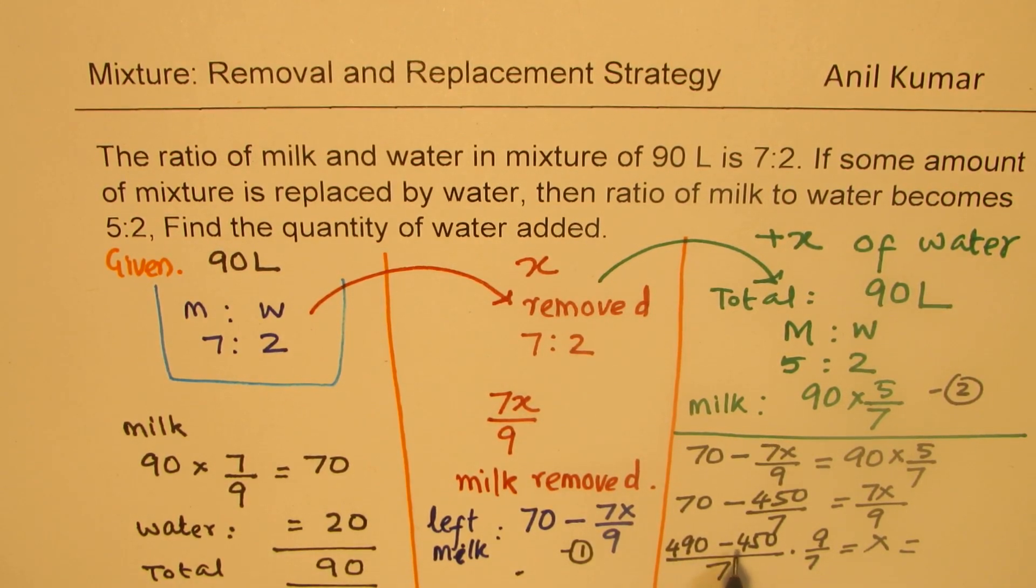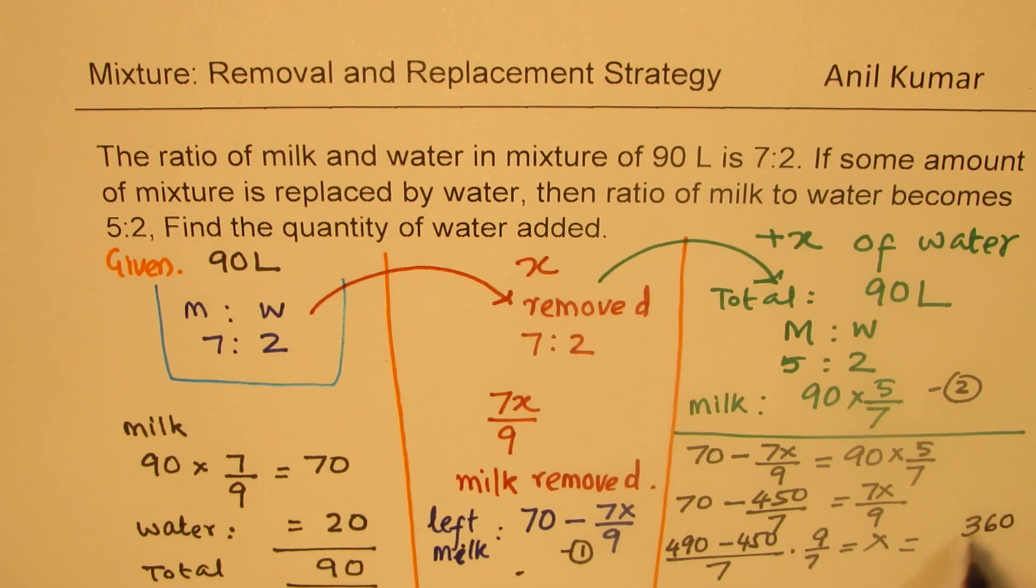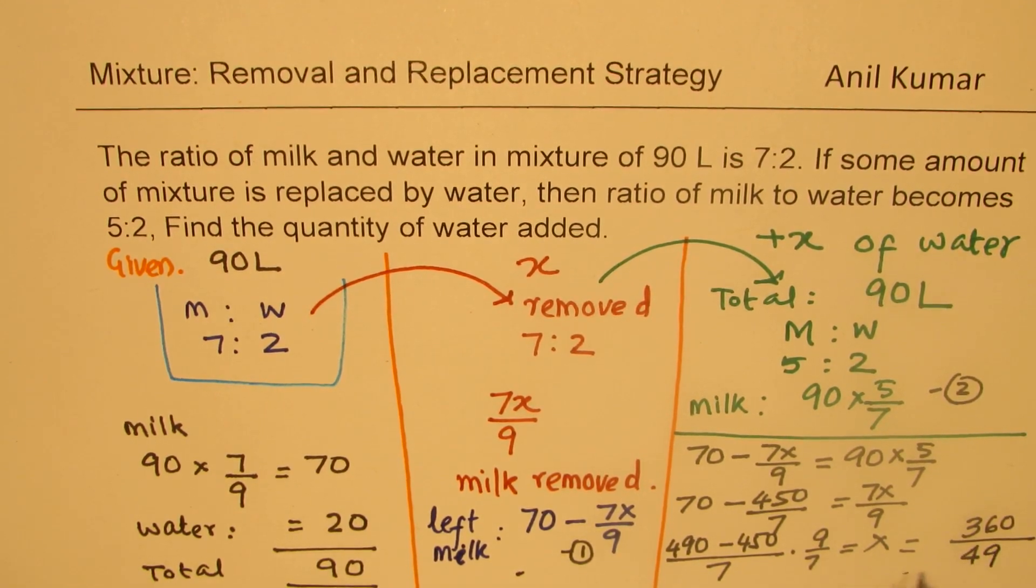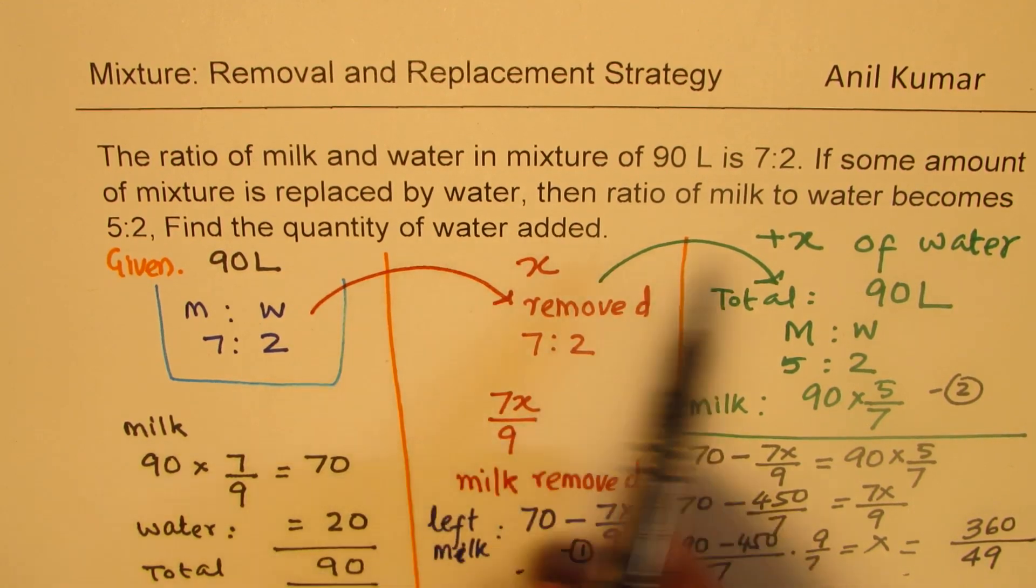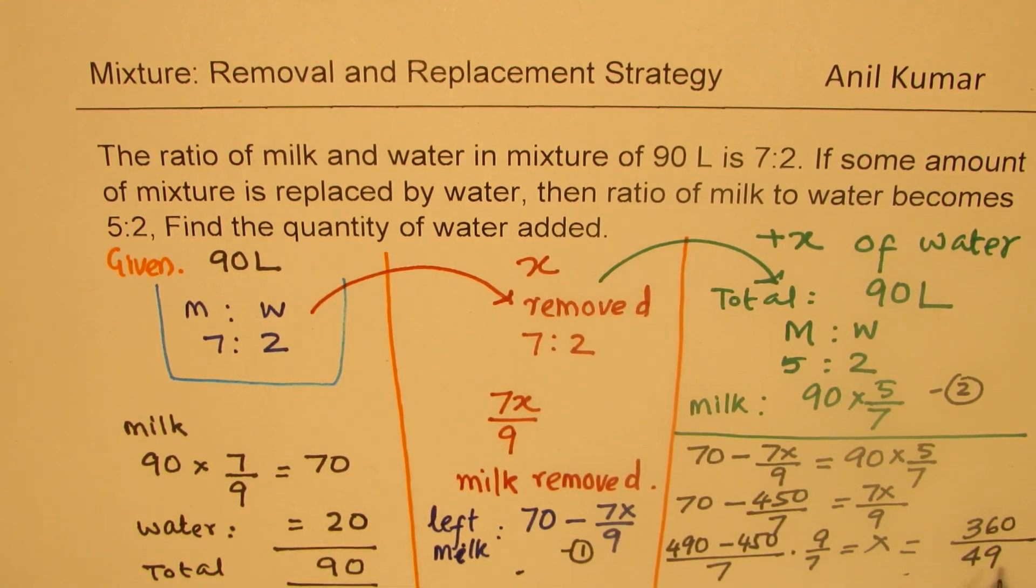So we can calculate this: 490 minus 450 is 40, so we get 40 times 9 is 360 over 49. So that is the quantity of x in liters, which has been removed, and that is the quantity of water which has been added.